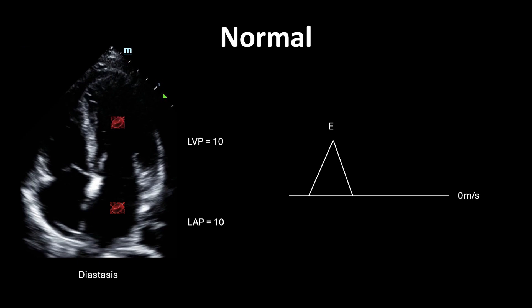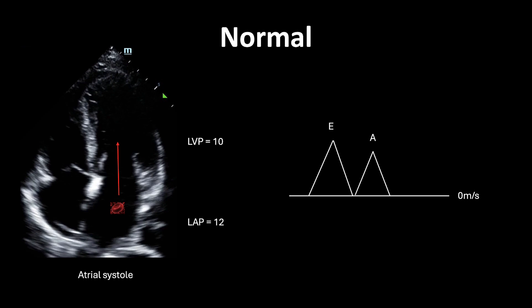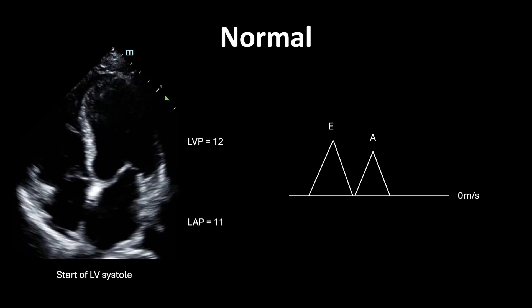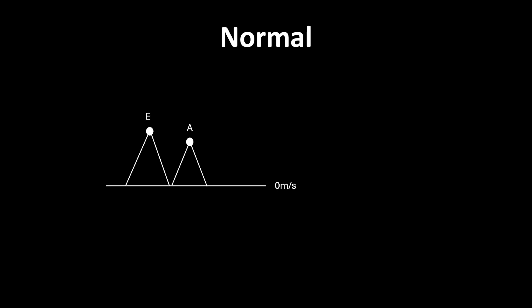As blood enters the LV and leaves the LA, LV pressure increases while LA pressure decreases. At some point the chambers equilibrate, creating no pressure gradient — blood stops flowing, its velocity is 0, and this is termed diastasis. Next, the LA contracts during atrial systole, increasing LA pressure above LV pressure, which drives blood from the LA to the LV. This creates another positive deflection termed the A-wave, for atrial systole, marking the end of diastole. The LV then contracts, increasing its pressure and leading to mitral valve closure. To measure E and A, simply take the peak velocity of each curve.